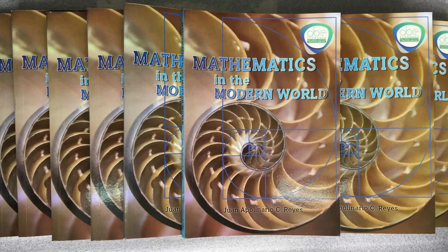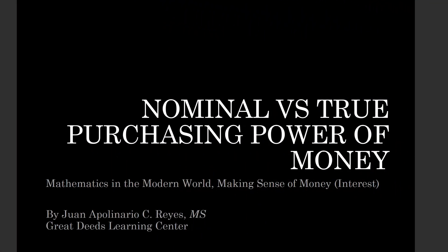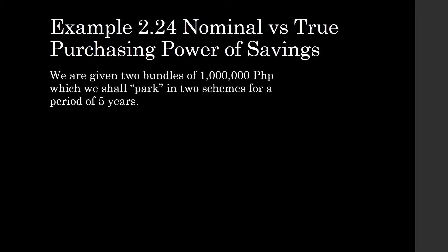This video is about inflation rate and what inflation does to our money. We look at the nominal versus true purchasing power of money in Example 2.24. We are given two bundles of 1 million pesos, which we shall park in two schemes for a period of five years.